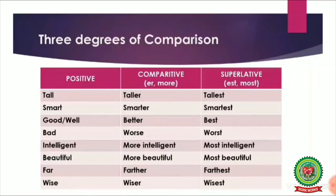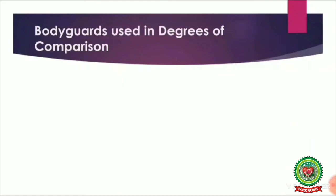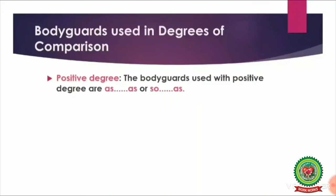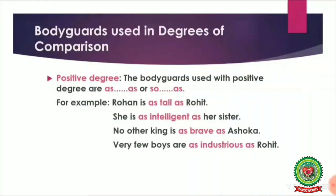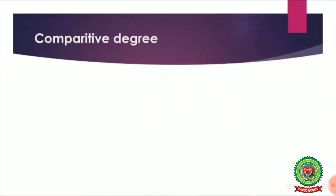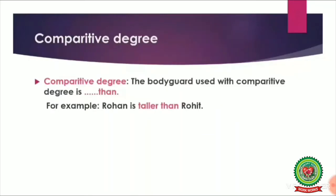Now, bodyguards are the words used with the degrees of comparison. With the positive degree, the bodyguards are 'as — as' or 'so — as'. 'So — as' is generally used in negative sentences. For example: 'Rohan is as tall as Rohit.' For the comparative degree, the bodyguard used is 'than'. For example: 'Rohan is taller than Rohit'; 'She is more intelligent than her sister.'